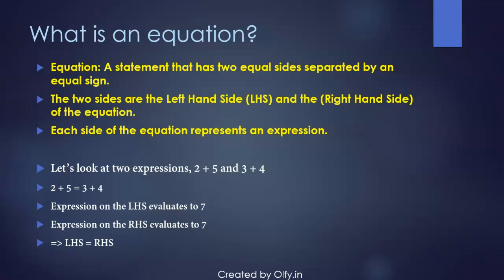Okay, now let's look at these two expressions: 2 plus 5 and 3 plus 4. Now we know 2 plus 5 equals 3 plus 4 because 2 plus 5 evaluates to 7 and 3 plus 4 also evaluates to 7.